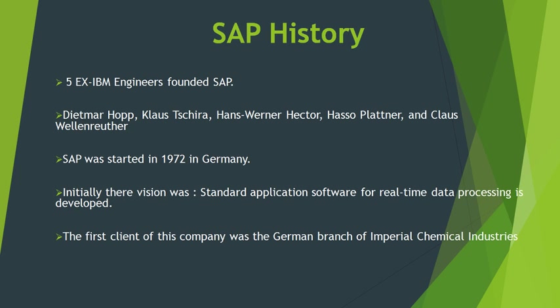SAP was started in 1972 by five former IBM employees in Germany. The original idea was to provide customers with the ability to interact with a common database for a comprehensive range of applications. Their initial vision was standard application software for real-time data processing. The first client of this company was Imperial Chemical Industry.